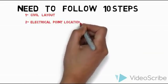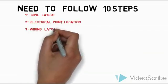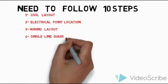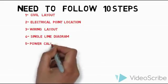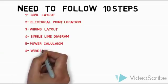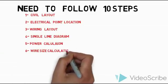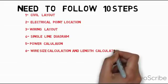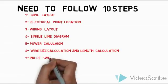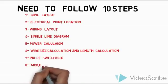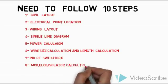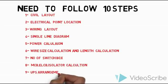The 10 steps are: civil layout, electrical point location, single line diagram, power calculation, wire size calculation, length calculation, switch box, MCCB and ELCB isolator and rating, UPS arrangement, and finally cost.